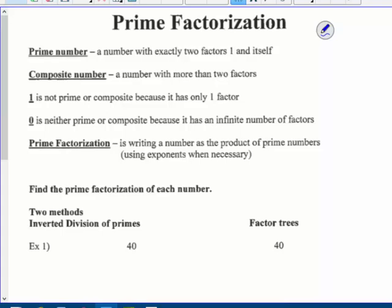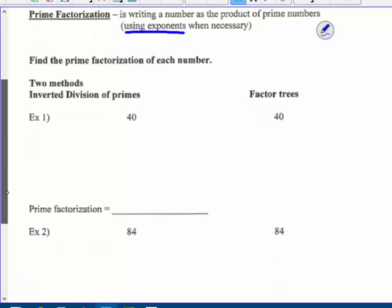Prime factorization is writing a number as the product of prime numbers. All composite numbers can be written as the product of prime numbers. And we want to use exponents whenever necessary.